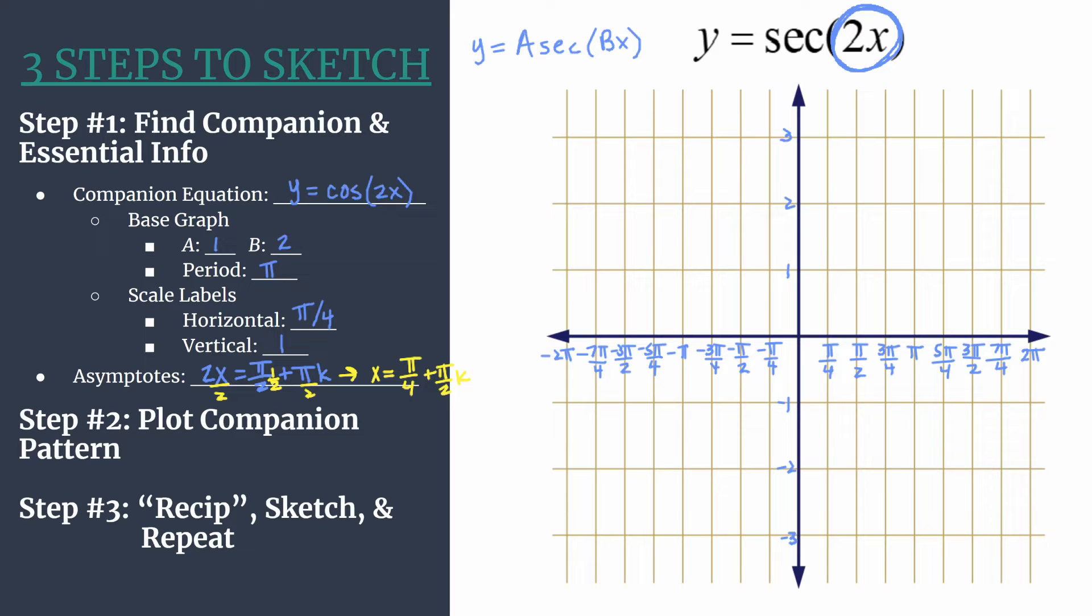For example, if you substitute in k is 0, you should have an asymptote on your final graph at x equals π over 4. You'd get the next one to the right if you let k be 1. So you should see that there will be an asymptote at 3π over 4.